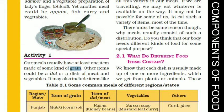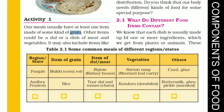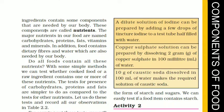Let's try to understand Topic 2.1 — What do different food items contain? We discussed that we used to have different food items. Then what do they contain, and why do we eat different types of foods? We know that each dish is usually made up of one or more ingredients, which we get from plants or animals. These ingredients contain some components that are needed by our body.